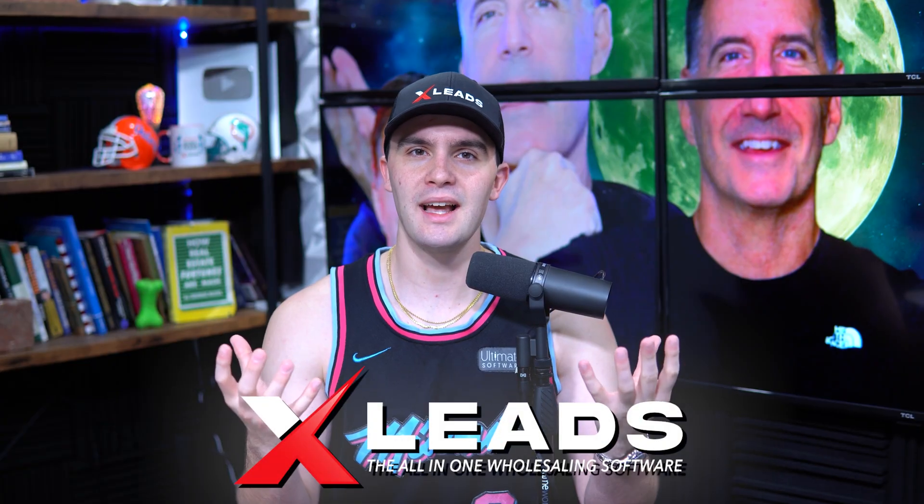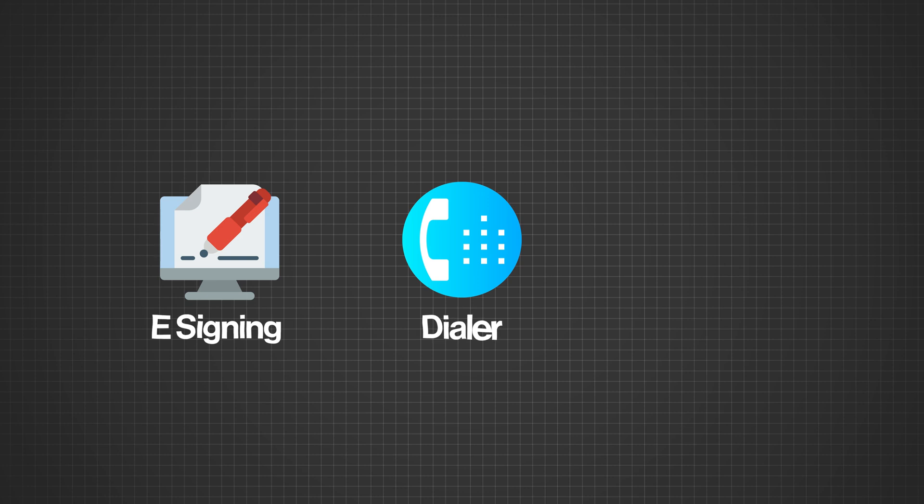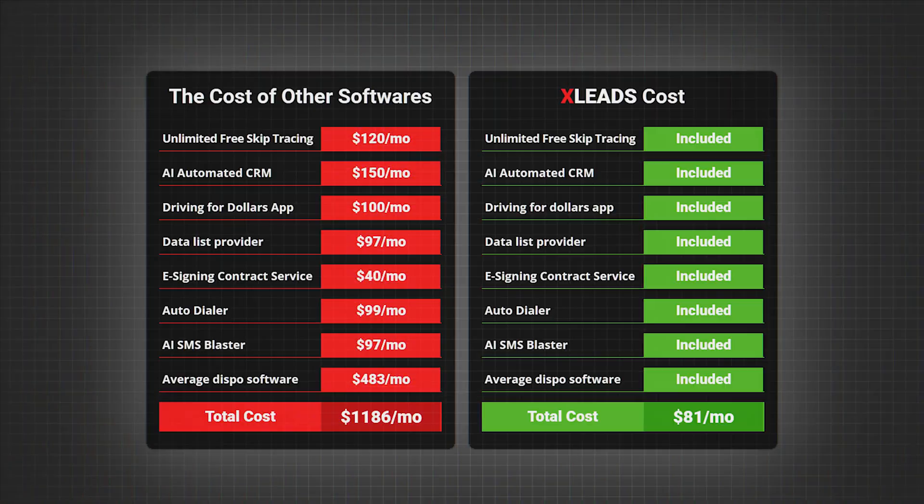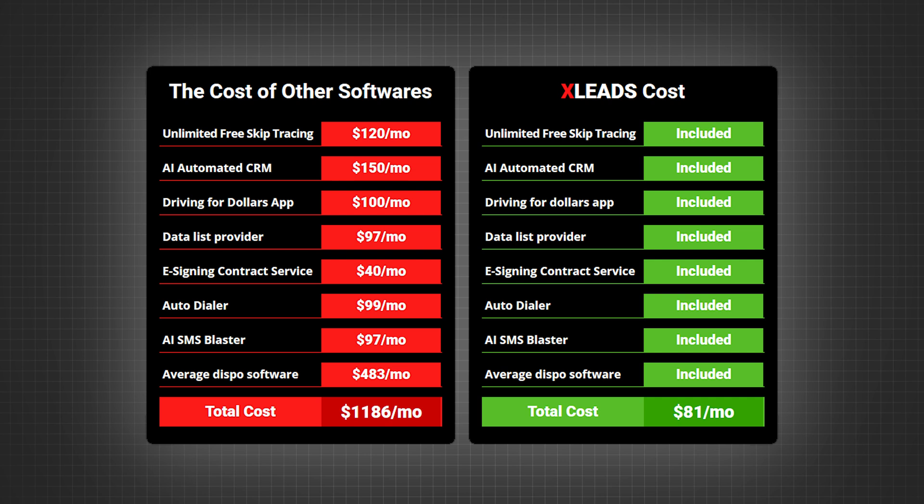A lot of people get confused about which is which. X-Leads is the actual base software, and Ninja Mode is our Go High Level CRM — we built an entire CRM on top of Go High Level just for wholesaling real estate. It's given to you absolutely free because it includes e-signing, a dialer, and SMS texting. Go High Level has the best CRM in the game, and most people charge an extra $100 on top of their software — we're just giving it to you for free.